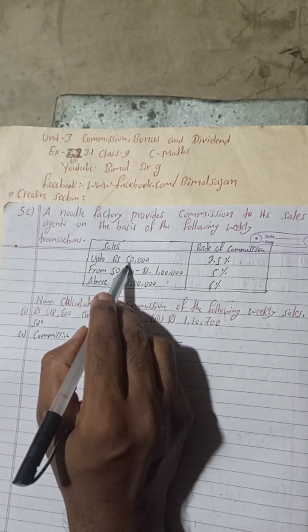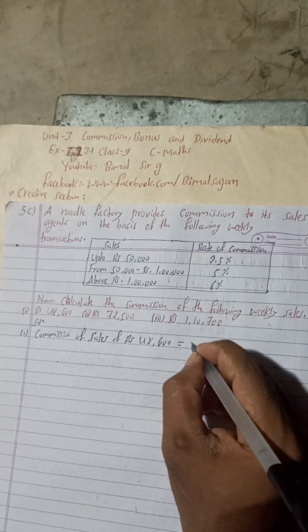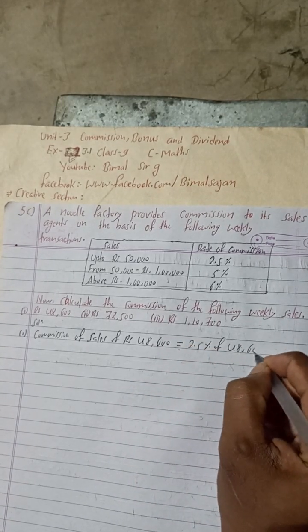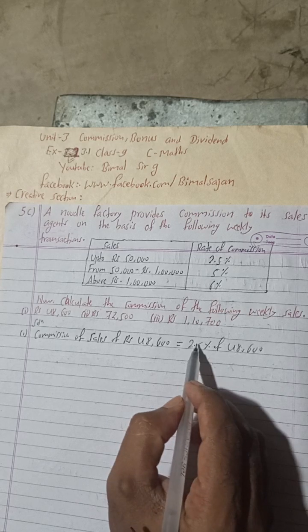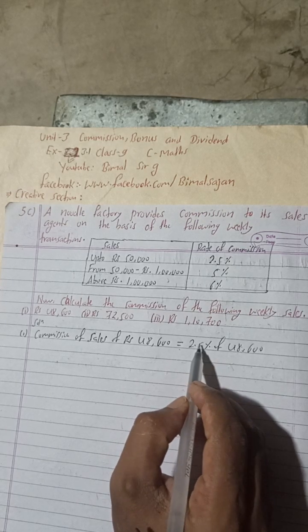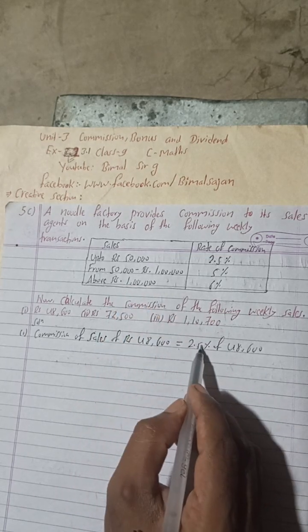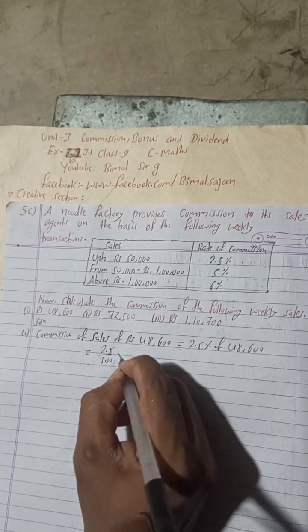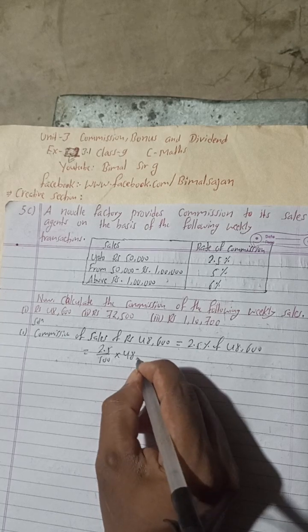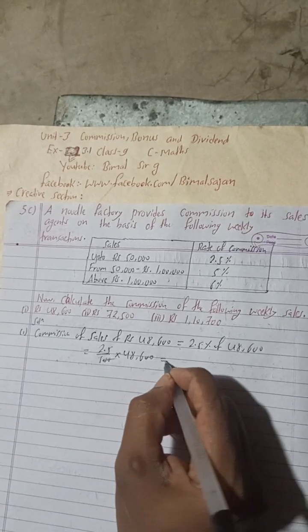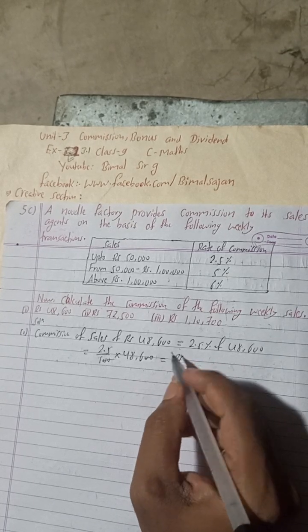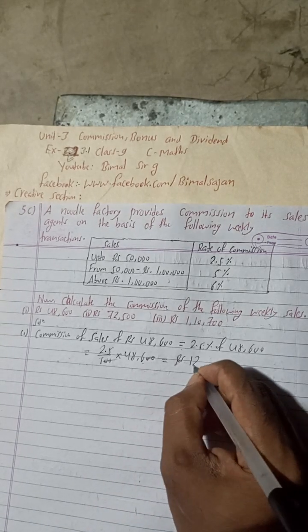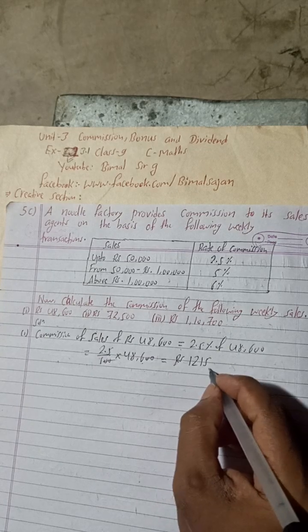Since the sale of Rs 48,600 is below Rs 50,000, we apply the 2.5% commission rate. So commission = 2.5% of Rs 48,600 = (2.5 ÷ 100) × 48,600. Solving this gives 2.5 × 486 = Rs 1,215.